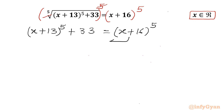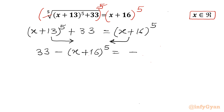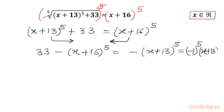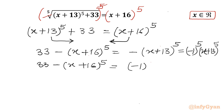Now I will take the (x + 16) term to the LHS and the (x + 13) term to the RHS. So LHS becomes 33 − (x + 16)^5, and RHS becomes −(x + 13)^5, which we can write as (−1)^5 × (x + 13)^5.